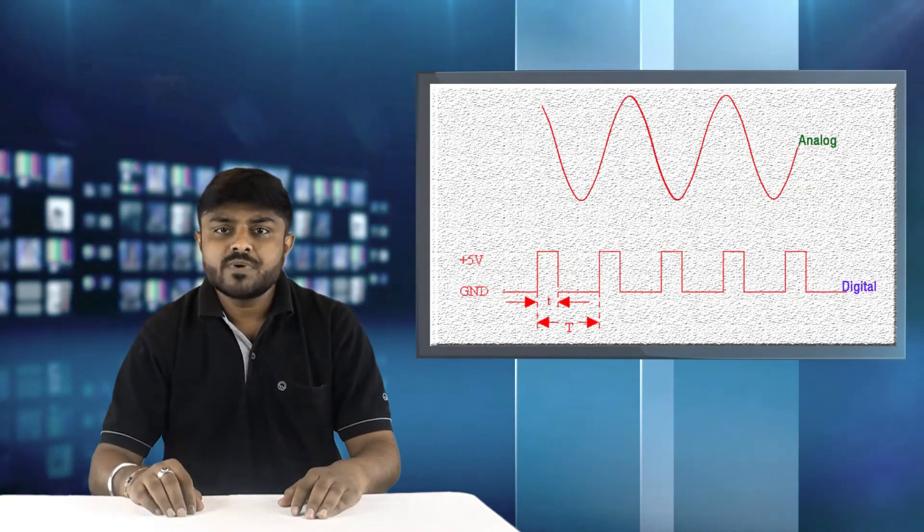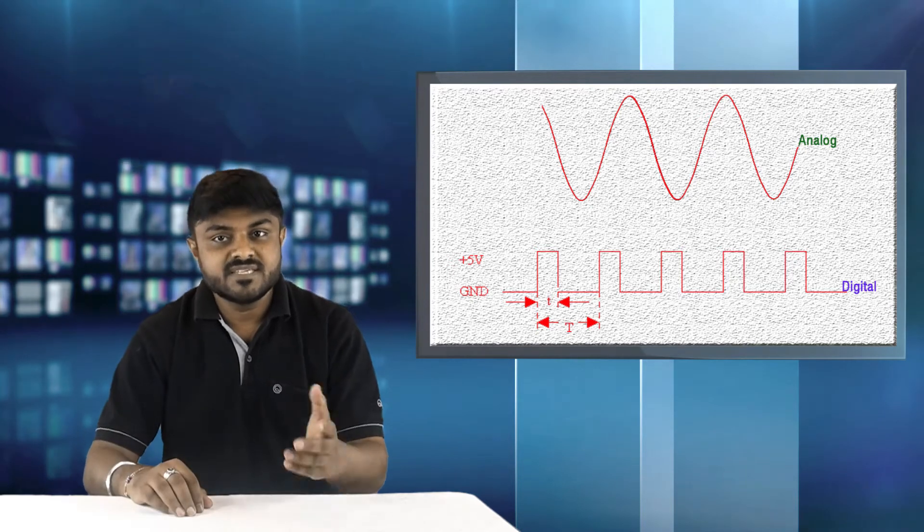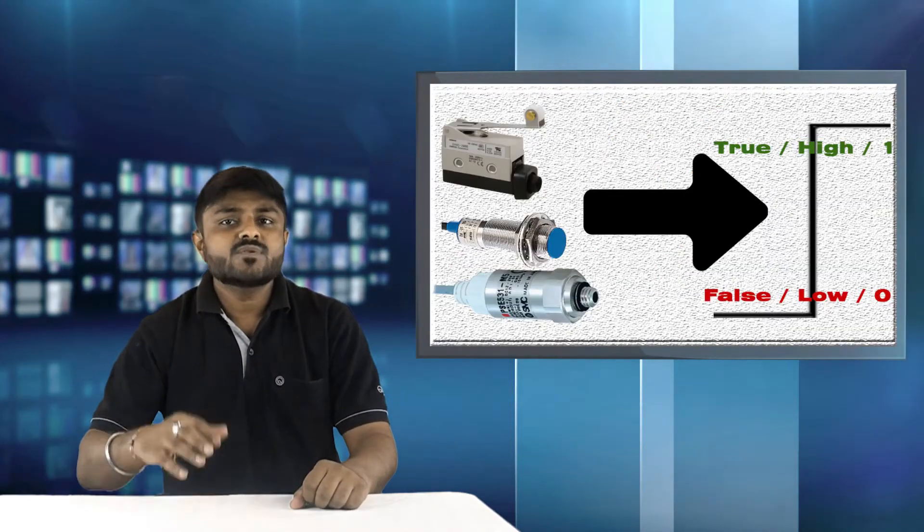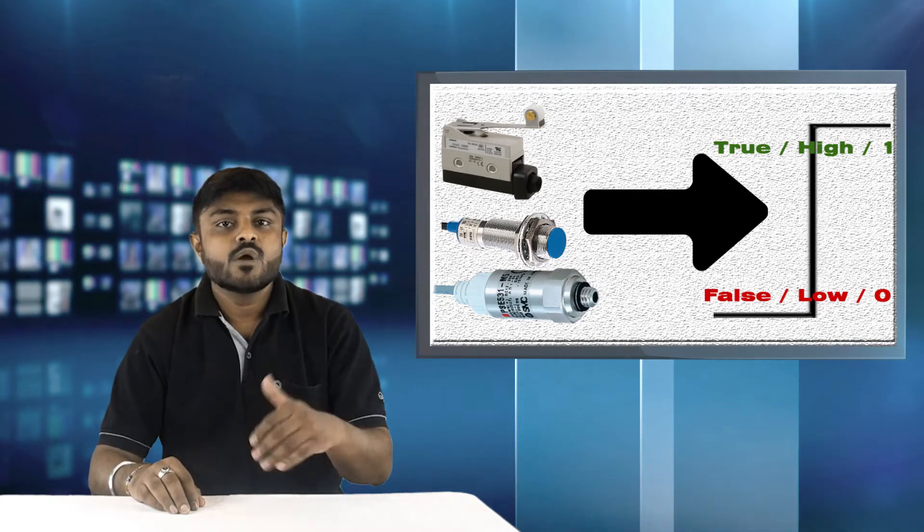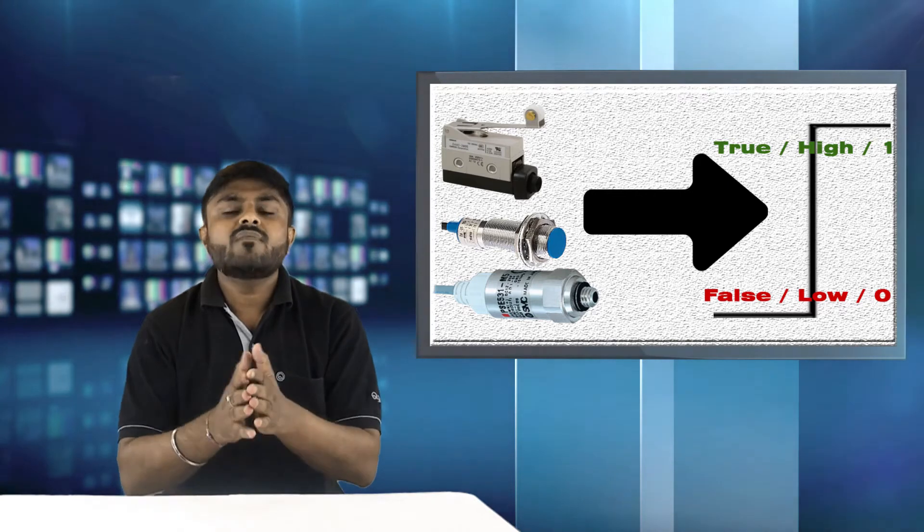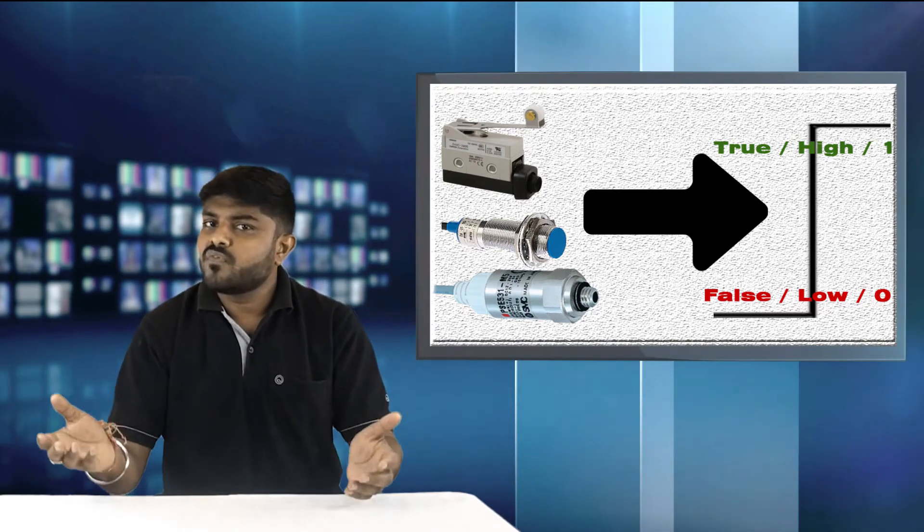The input and output for the automation system may be digital and/or analog. Digital means it has only two states like high or low, 0 or 1, or in other words true or false.